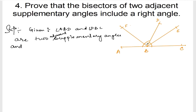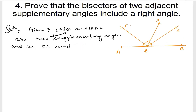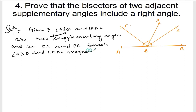And lines FB and BE bisect angle ABD and angle DBC respectively. Okay, this is the given. So I have written that angle ABD and angle DBC are supplementary angles, and FB and BE bisect these both angles.